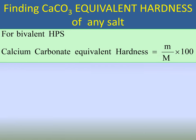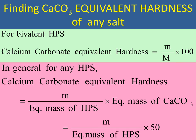For a more general form applicable to any salt, the equation is expressed in terms of equivalent mass: CaCO₃ equivalent hardness = (m / equivalent mass of hardness-producing salt) × 50, where 50 is the equivalent mass of calcium carbonate. This general form is preferred over the molecular mass form when dealing with salts that are not bivalent.